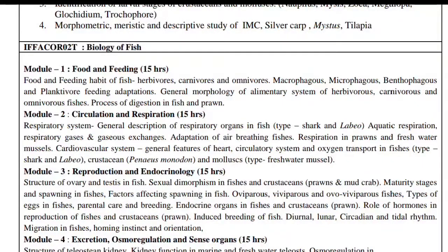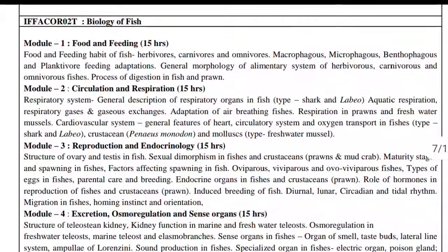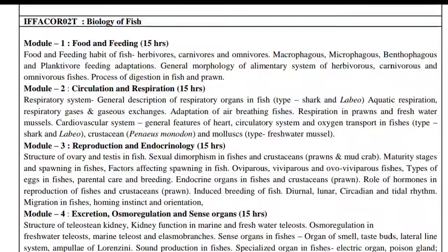Module 2 covers circulation and respiration. The respiratory system includes a general description of respiratory organs in fishes — types in sharks and labyrinth fish — aquatic respiration, respiratory gases, gaseous exchange, and adaptation of air-breathing fishes, respiration in prawns and freshwater mussels.